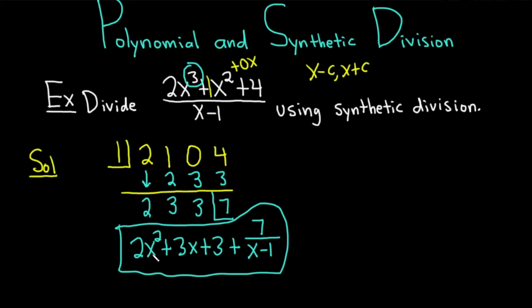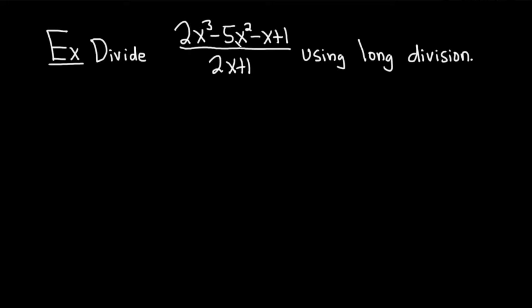Let's go ahead and do an example of polynomial long division, which is a little bit more challenging than this. Divide 2x³ - 5x² - x + 1 over 2x + 1 using long division. Let's go ahead and carefully work through this example.